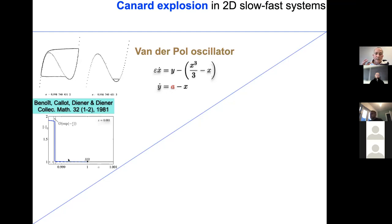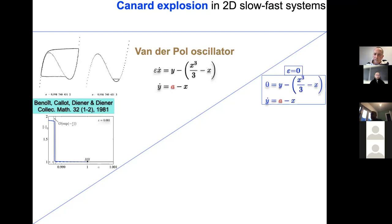Another interesting aspect, associated with the term canard explosion: looking at the bifurcation diagram with respect to a constant forcing parameter a, there is a stable equilibrium for a greater than one or smaller than minus one, then a Hopf bifurcation. At an order-epsilon distance from the bifurcation point, there is a very sharp increase in the amplitude of the cycle within a very narrow parameter change — that is the canard explosion.